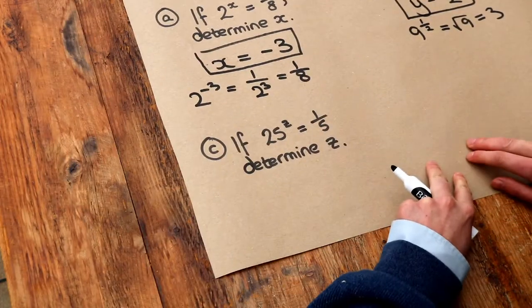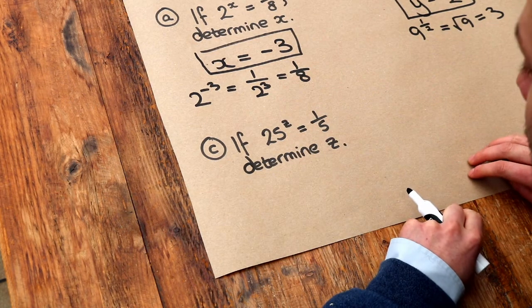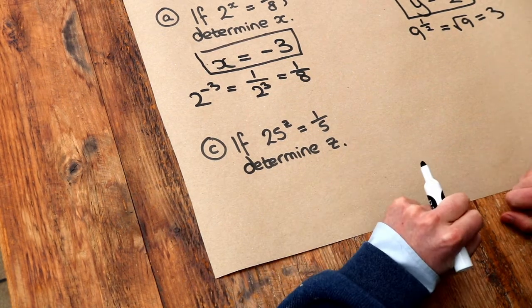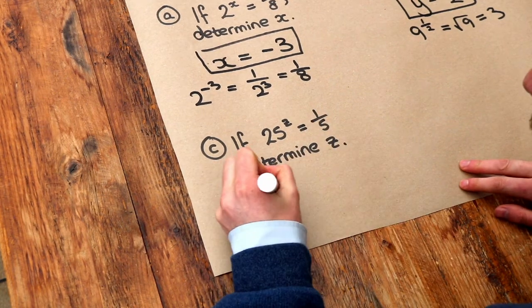And this final one, if 25 to the z is equal to 1 over 5, what is z? Well, we've got a fractional and a negative power this time. Can we see that we've done 1 over it, so z must be negative.